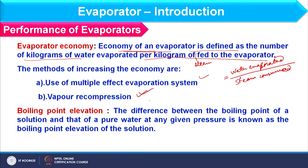We also consider boiling point elevation in evaporators. When a solution contains some other component — an impurity — the vapor pressure reduces compared to the pure solvent. More heat is required for the desired evaporation, so the temperature of the solution increases compared to that of the pure solvent. The difference between these two temperatures gives the boiling point elevation. This will be further discussed in subsequent lectures.